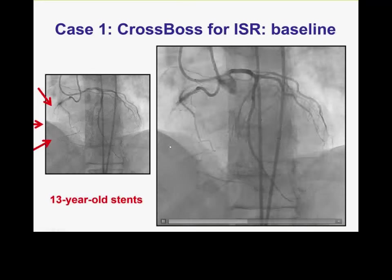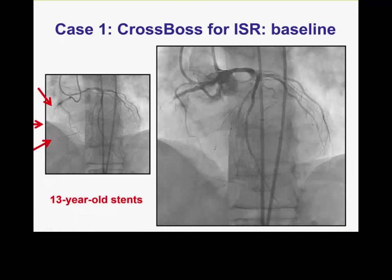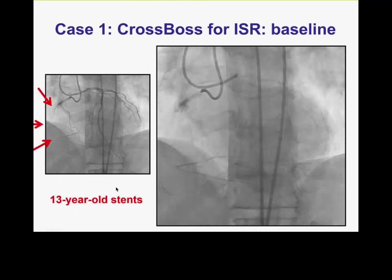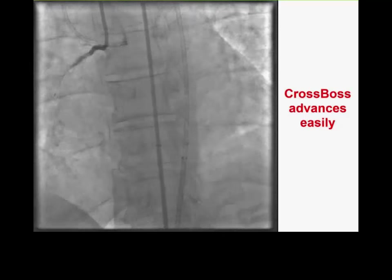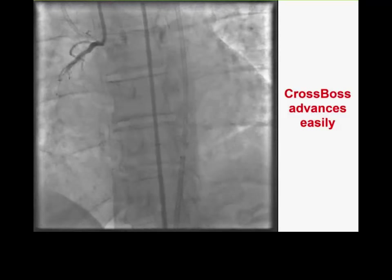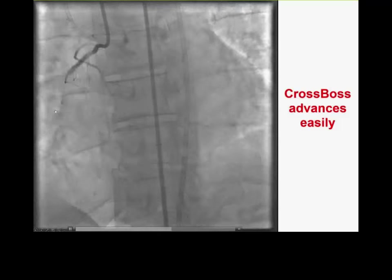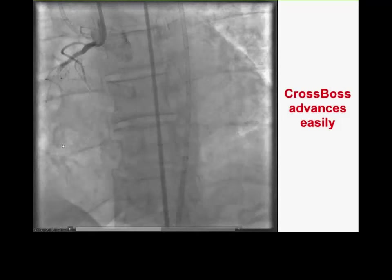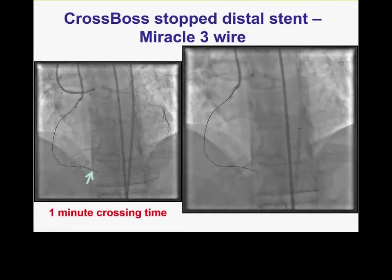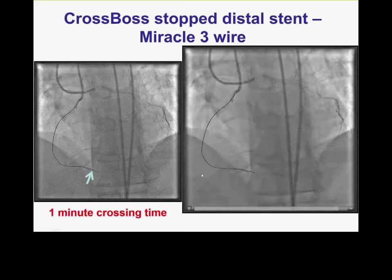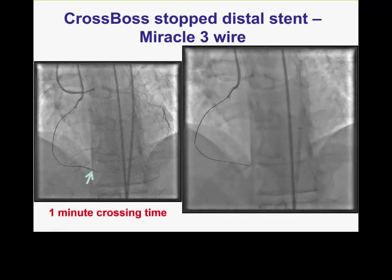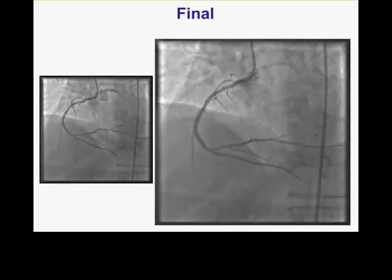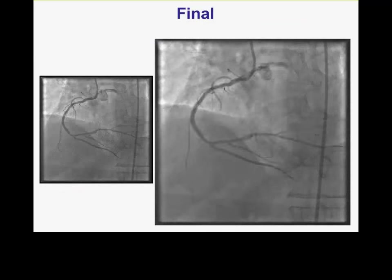Here is an example of an in-stent restenosis CTO case with reconstitution at the distal bifurcation of the PDA and PLV — a fairly long occlusion. The CrossBoss catheter is particularly useful in cases with previous coronary stents because the stents act as a barrier preventing the CrossBoss from exiting the vessel. Within one minute we advanced across and pushed back a workhorse wire into the distal true lumen. CrossBoss can really facilitate crossing of in-stent restenosis CTOs with high success rates and efficiency. The result after additional stenting within the previously restenosed stents is shown.